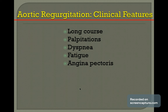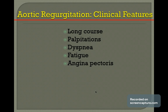Clinical features include a long course of progressive palpitations, dyspnea, and angina as a rule. This pattern is seen in cases of mild, moderate, and severe aortic regurgitation.